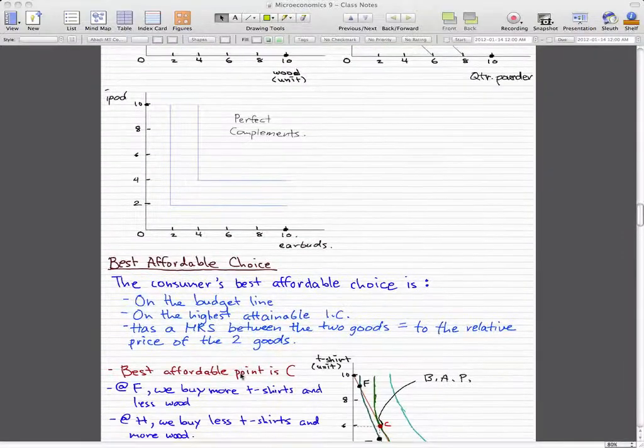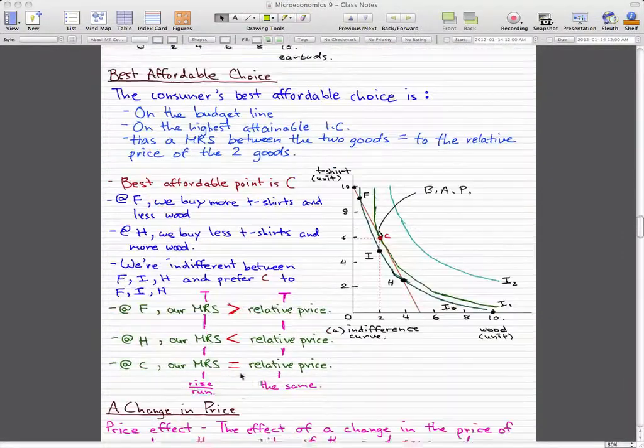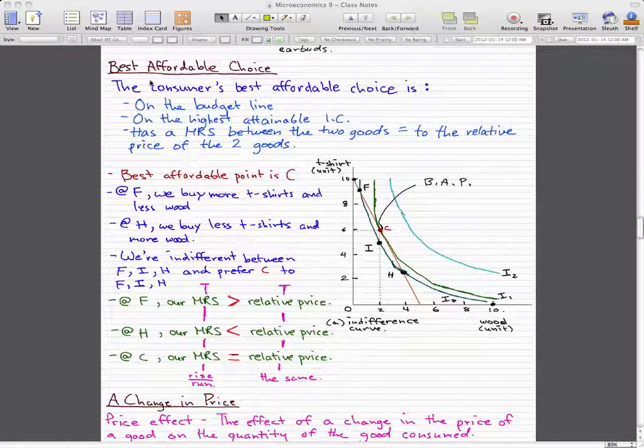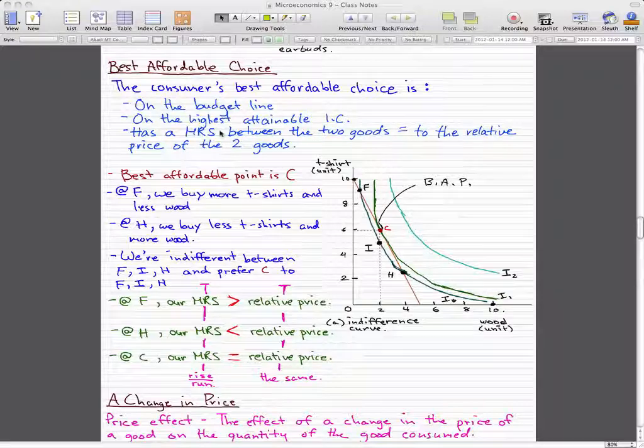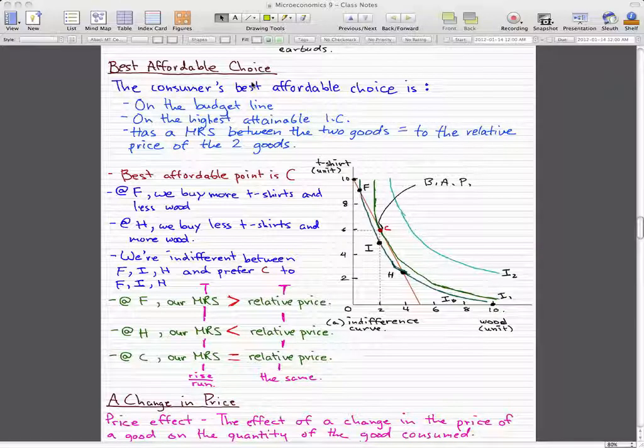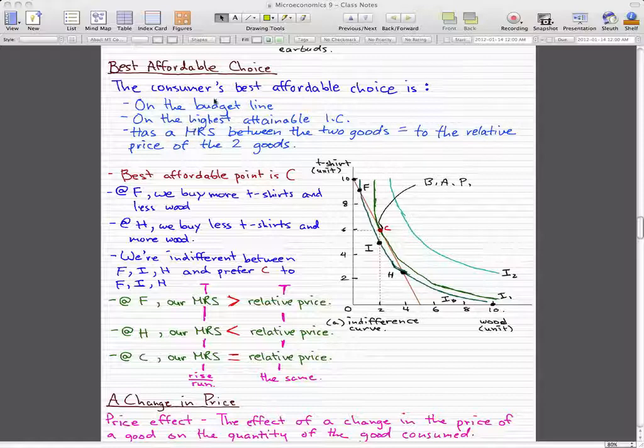Now we're going to talk about best affordable choice, and then we'll end our video. The consumer's best affordable choice is on the budget line, on the highest attainable indifference curve, and it has a marginal rate of substitution between two goods equal to the relative price of the two goods. We already knew all this from the last couple of videos.